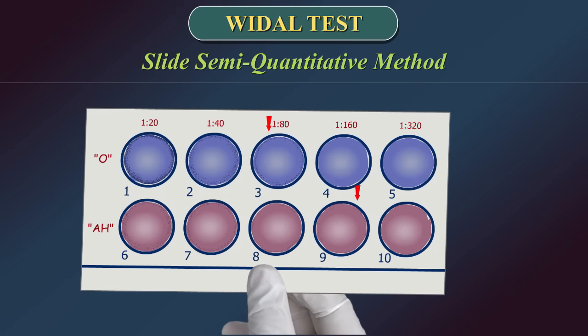Interpretation of result: Agglutination is a positive test result. The titer is reported as a reciprocal of the highest dilution which shows a positive test result.